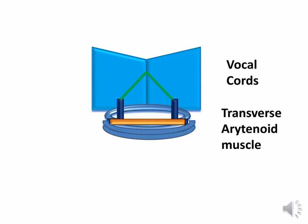The transverse arytenoid muscle contracts to produce the adduction of vocal cords.